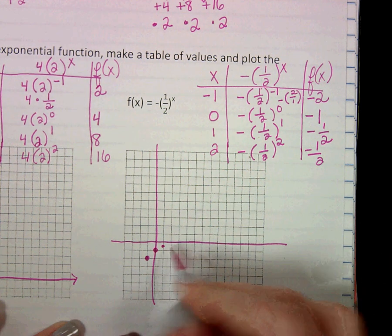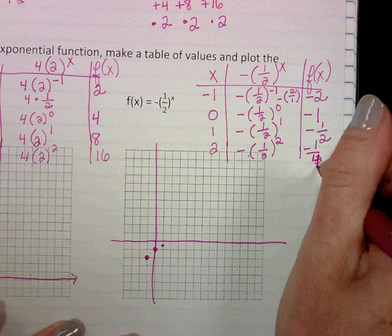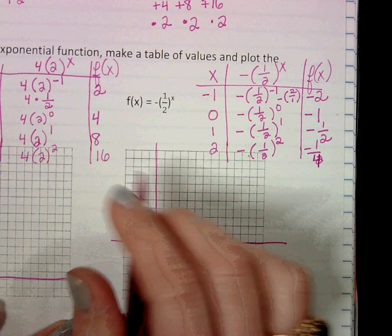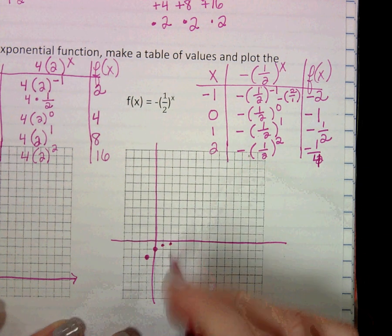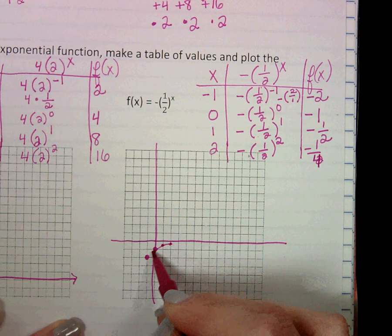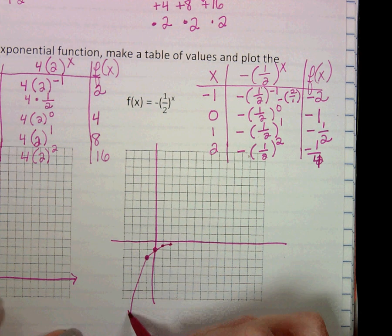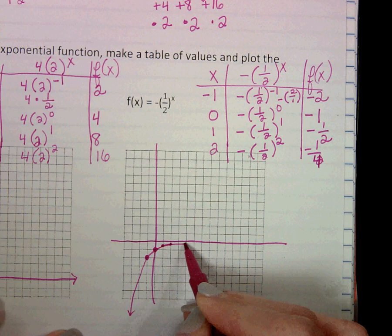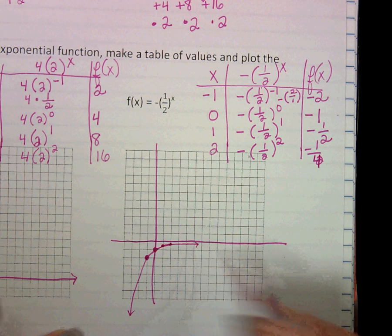and two, oops, this should be four. I didn't write that down right. And then two, negative one fourth. So you can see we're getting closer and closer and closer, but we're never actually going to hit that y-axis. It's going to look like it, but never is.